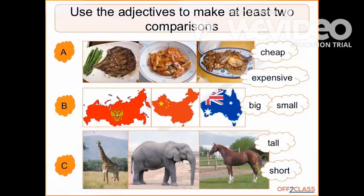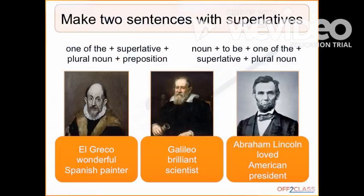Using the adjectives, make at least two sentences: A) cheap and expensive, B) big or small, C) tall and short. Also make two sentences about the following: El Greco — a wonderful Spanish painter; Galileo — a brilliant scientist; Abraham Lincoln — a loved American president.